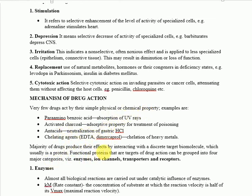The drugs we use interact with a discrete target molecule, which is a protein. This protein target is divided into four types: the enzyme, ion channels, transporter, and receptor. A drug will bind to the enzyme, ion channels, transporter, or receptor, and then show its mechanism of action.